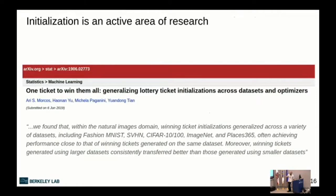The lottery ticket hypothesis says we build extremely large networks to explore an exponential number of subnetworks via different initializations. Among them there is a 'winning ticket' — a subnetwork that, with the right initialization, learns as well as the full network. This suggests we may be building large networks partly because of poor initialization. If we could find better initializations, we might train much smaller networks to achieve the same performance. A recent paper from last month explores this for image classification, showing winning ticket initializations transfer across datasets.